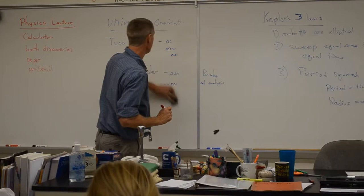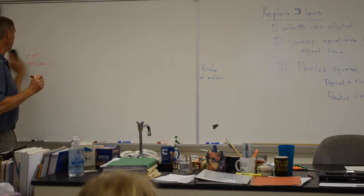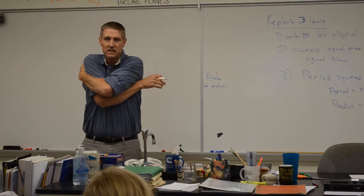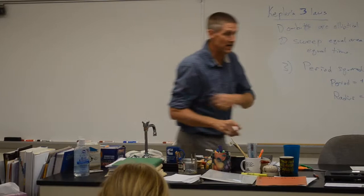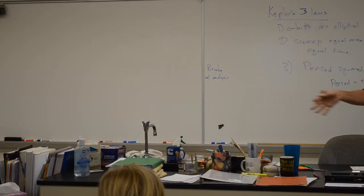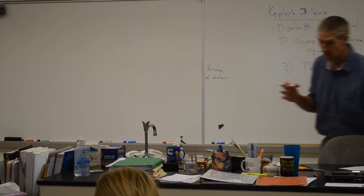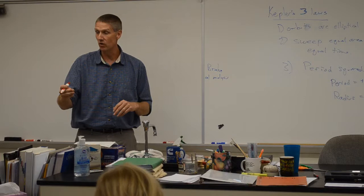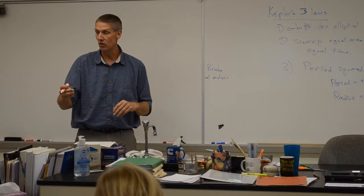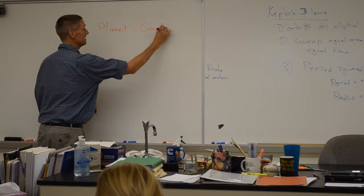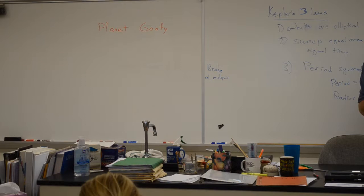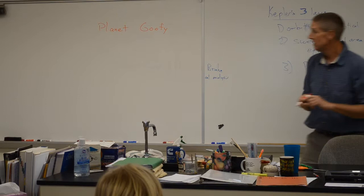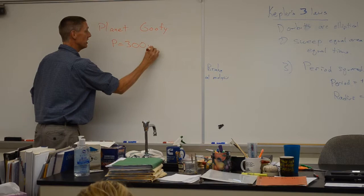Let's do a mathematical problem. About two years ago they decided Pluto was not a planet — I've said they're wrong, Pluto's a planet. My very educated mother... pizza. Also, they've discovered a new planet outside of Pluto — they're going to call it Goofy, just another Disney character. It takes 300 years for Goofy to go around the sun. I'm going to calculate the radius for that.